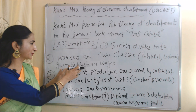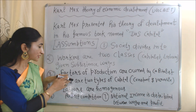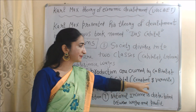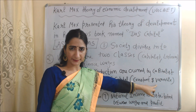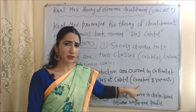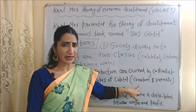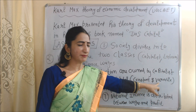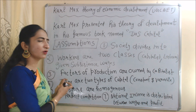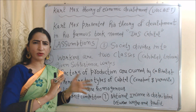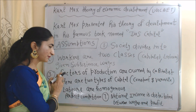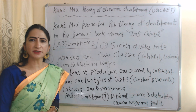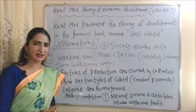The next assumption is that factors of production are owned by capitalists. There are two types of capital: constant capital and variable capital. Constant capital includes material and machinery, and variable capital includes labor. The next assumption is that laborers are homogeneous — all labor is the same. There is perfect competition in the economy, and national income is distributed between wages and profit.